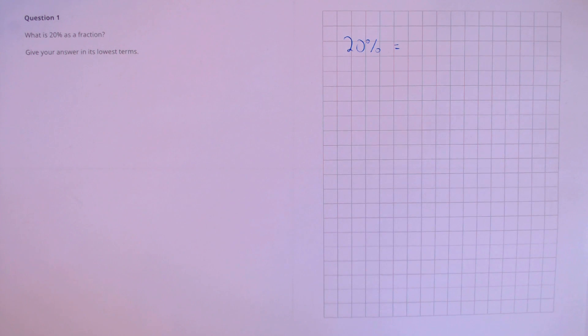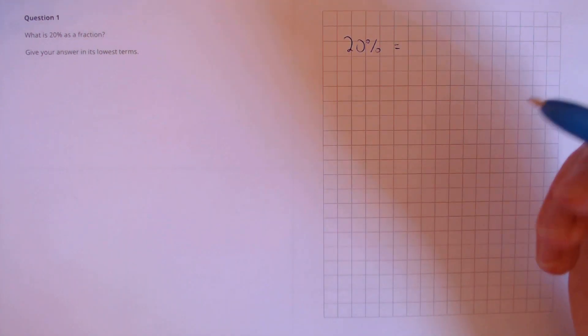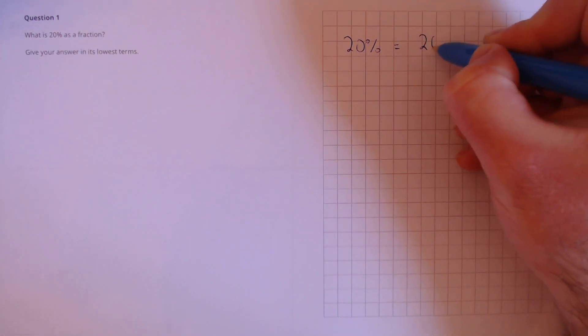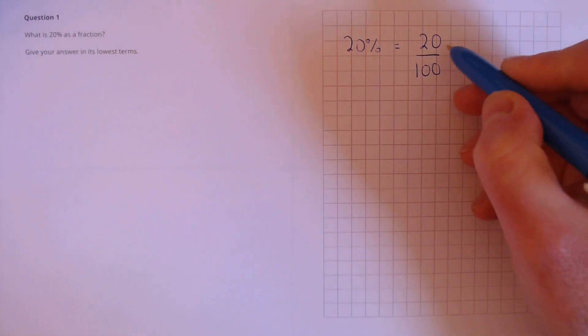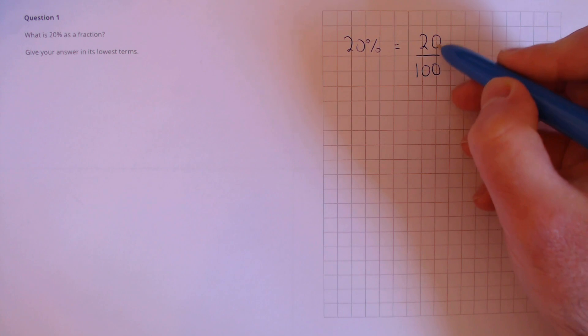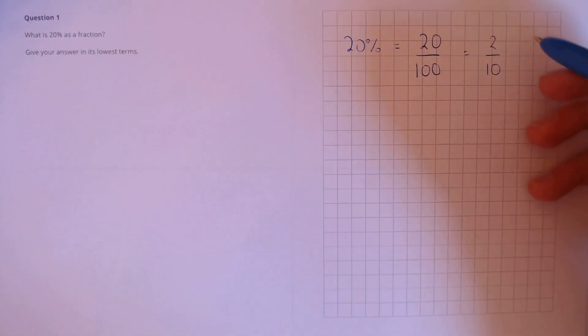Question 1: What is 20% as a fraction? Give your answer in its lowest terms. So 20% means 20 out of 100. We write that as a fraction, 20 divided by 100. Now we just need to simplify. We can divide by 10, so we divide both the top and bottom by 10 to make sure the fraction is the same. And then we can divide by 2, which gives us a fifth.